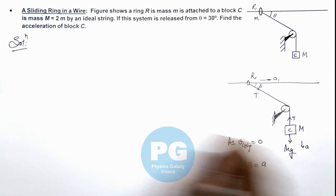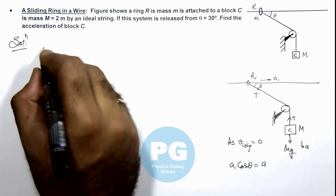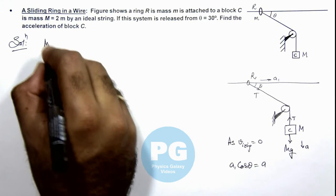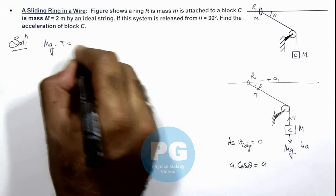So in this situation if we write the equation of motion, we can write for the block it is mg minus T is equal to m ay.